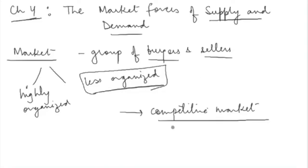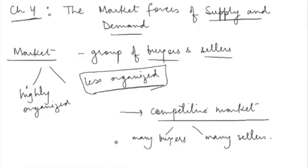Competitive markets have many properties, but the two main ones are: first, there are many buyers and many sellers in such a market. Second, the product or service in the market is a homogeneous product — meaning all sellers are selling the same product of the same quality, same shape, same color, and same size. Every seller has exactly the same product.